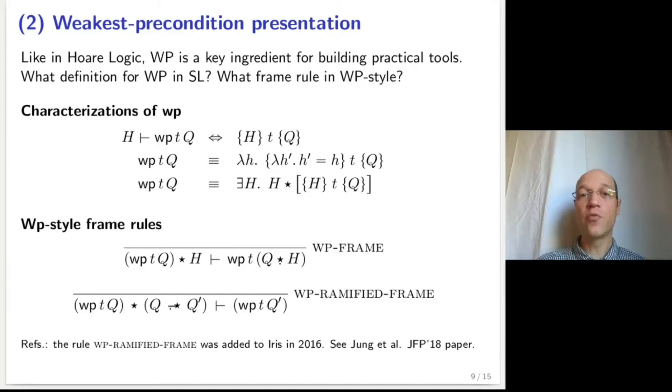The weakest precondition frame rule can be read as follows. If I own a resource state in which I can execute the term T and obtain the post-condition Q, and separately I own a piece of state described by H, then altogether I own a piece of state in which the execution of T terminates and produces a post-condition described by Q extended with H.